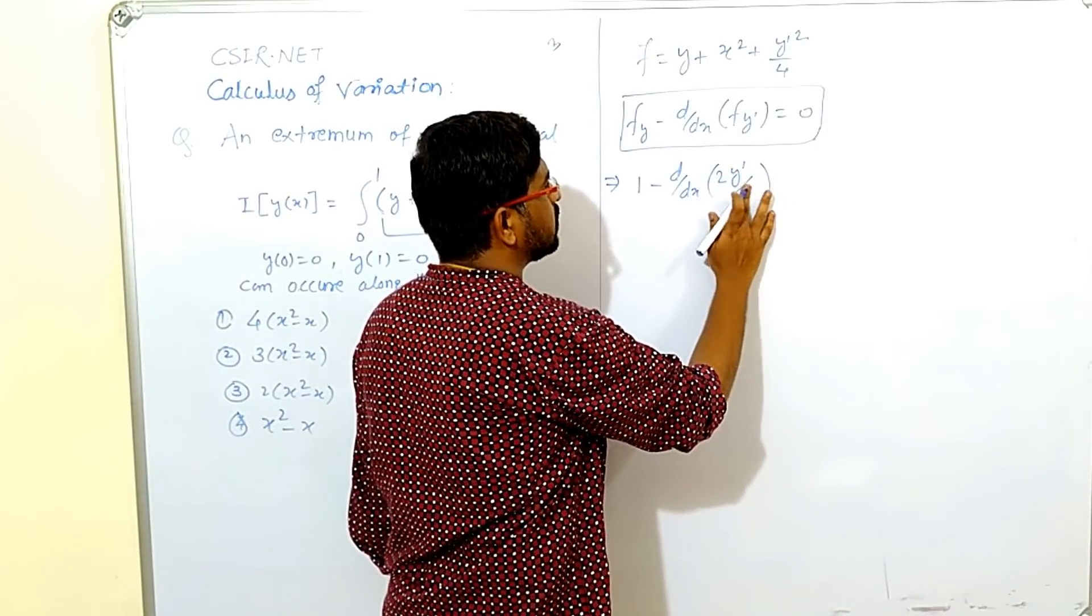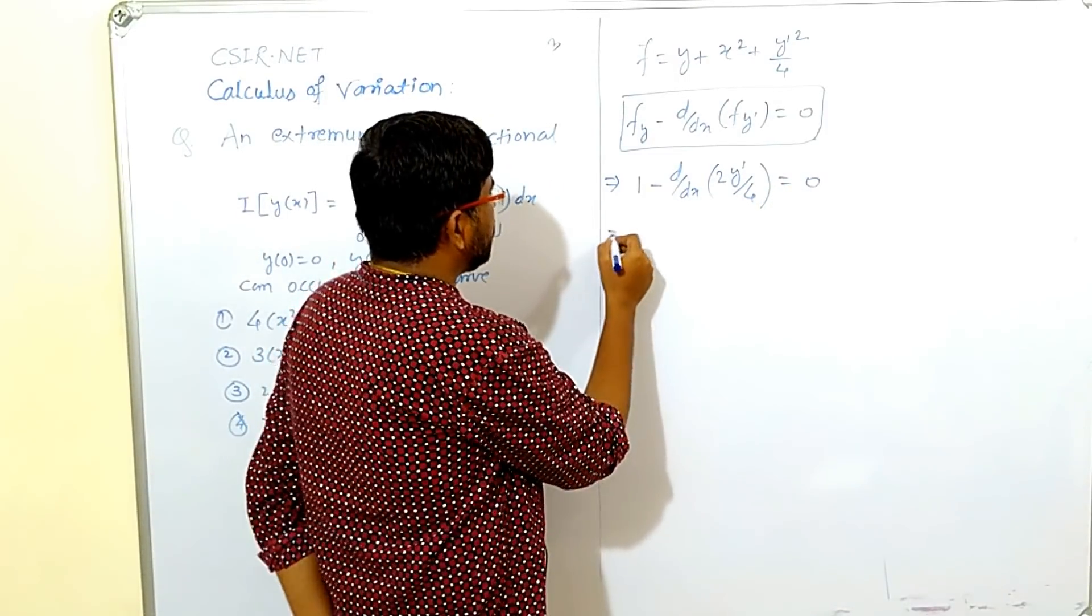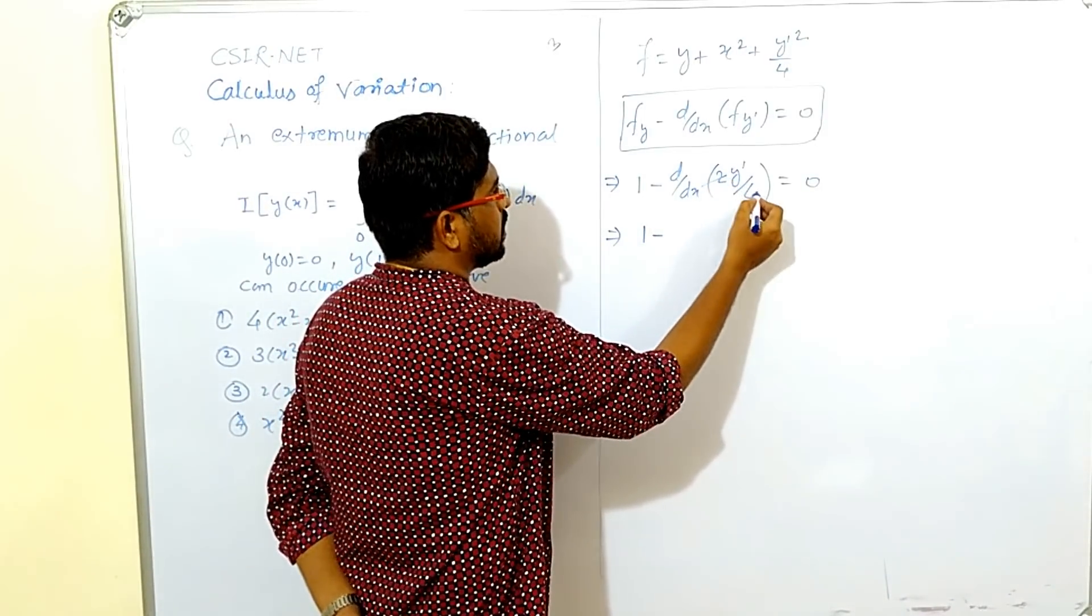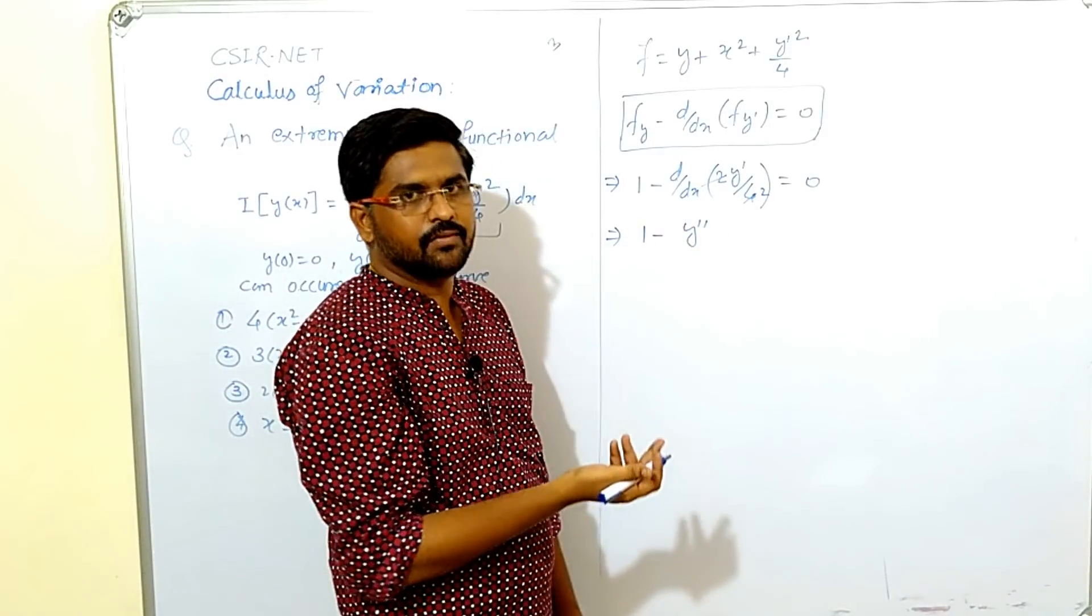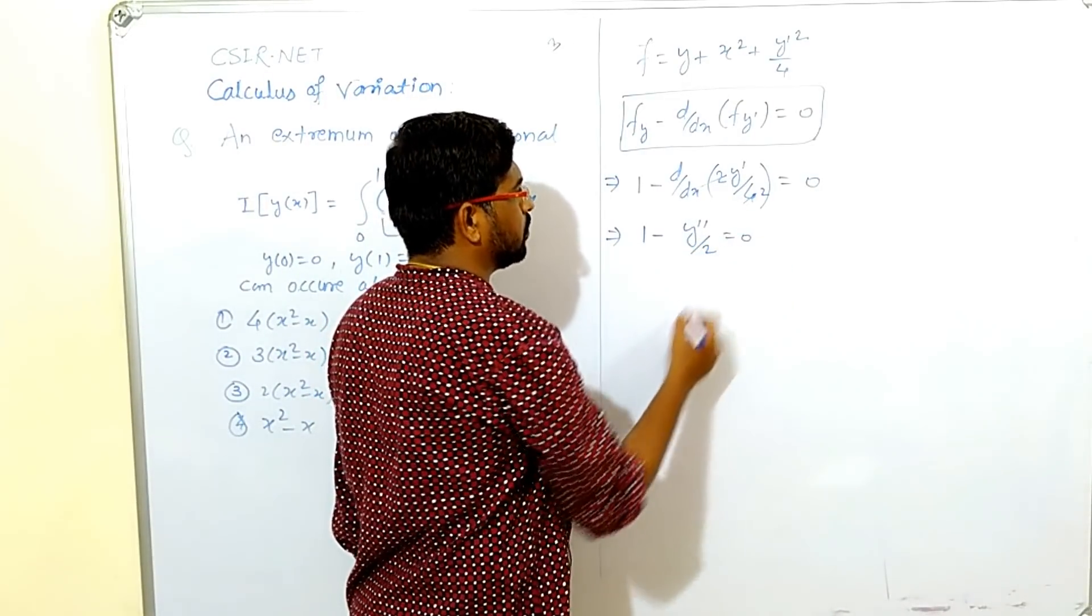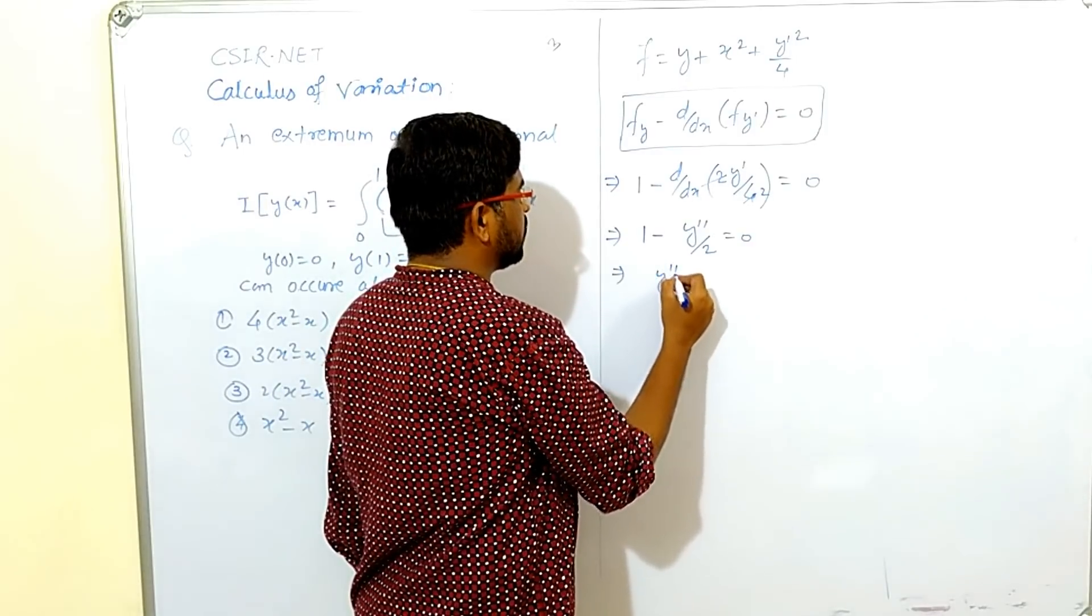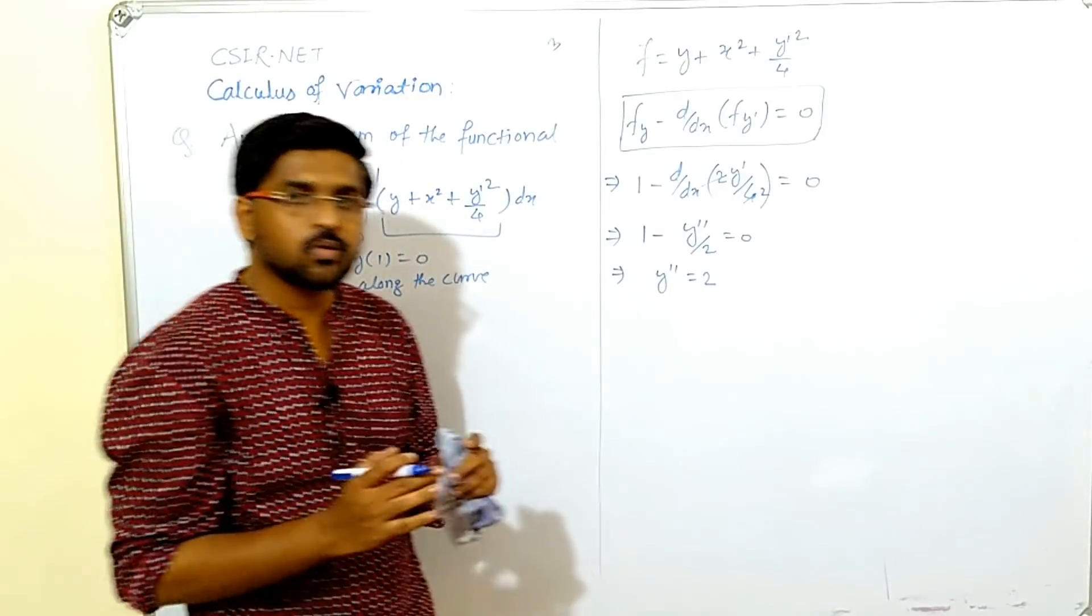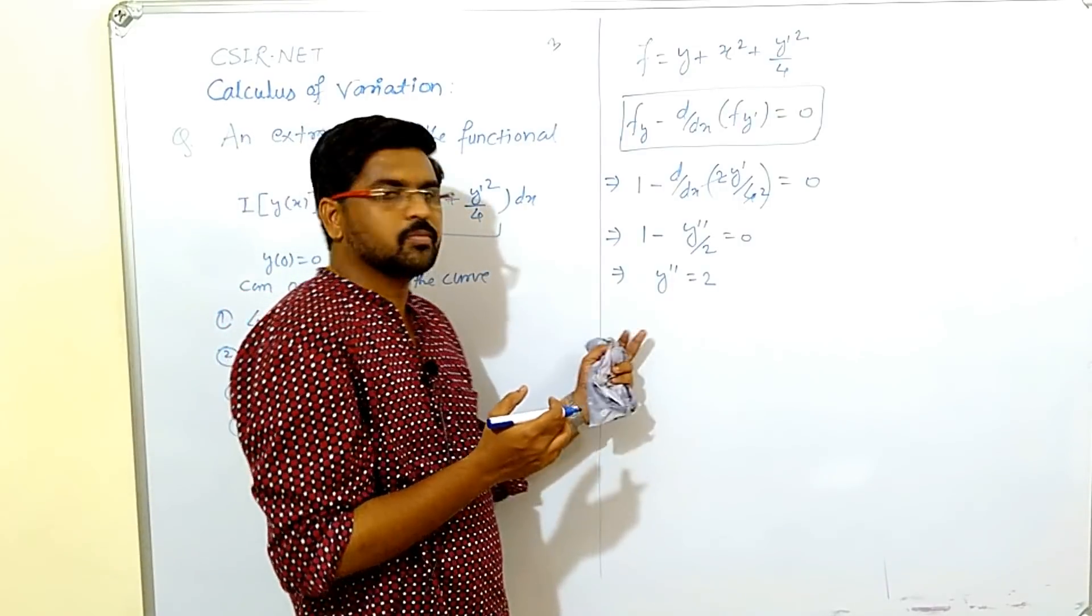Or we can write like this equals to 0. After simplifying, 1 minus it get cancelled and we get 2, and here we get y double dash because this is ordinary derivative now d/dx of y dash, y double dash by 2 equals to 0. From this we get y double dash equals to 2. Simply we get second order linear differential equation which is non-homogeneous because right hand side is non-zero.